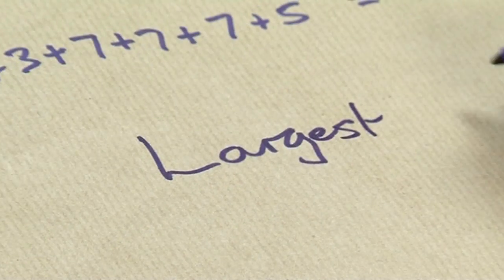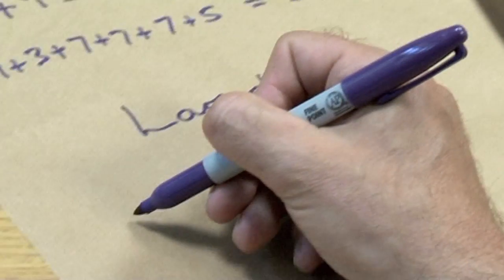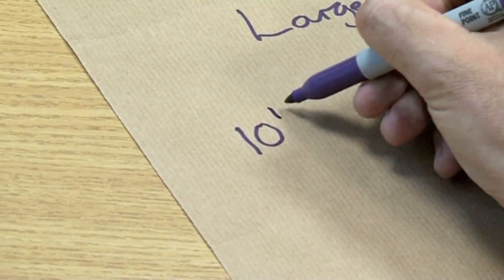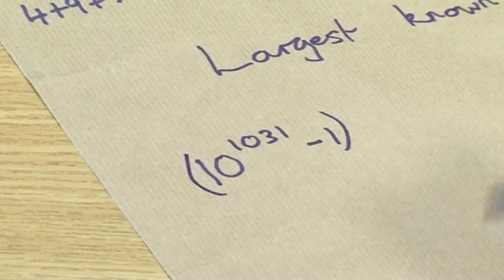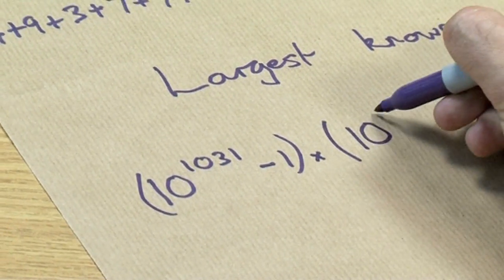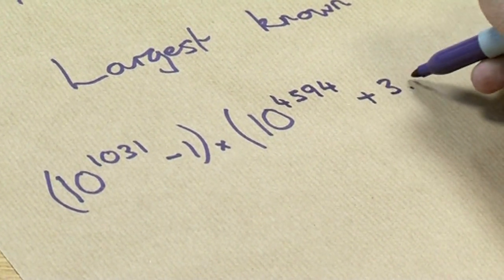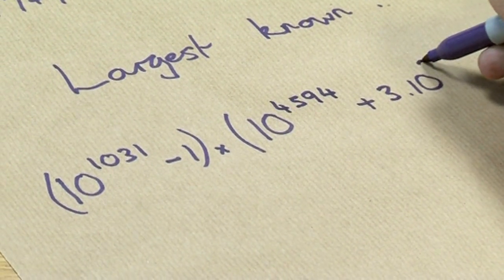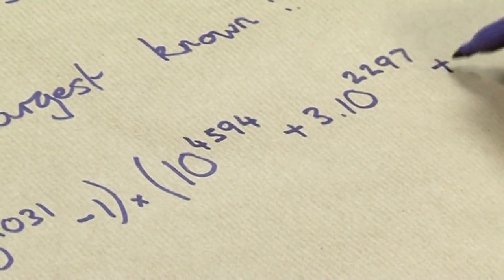What really blew me away was when I discovered what the biggest known Smith number is. And I thought I'd write that one down for you. Because I'm not sure how they were able to check it all. OK. It's a big one. So 10 to the power 1031 minus 1. That one's very important. OK. That's all multiplying the following: 10 to the power 4594 plus 3 times 10 to the 2297 plus 1 again.